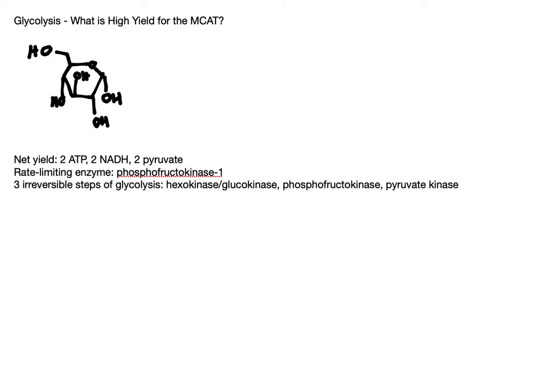One thing to note is that most lessons on glycolysis miss the forest for the trees, so here are a few big-picture facts to keep in mind. Number one: glycolysis only happens in the cytosol. In fact, that first step with hexokinase/glucokinase is entirely dedicated to making sure glucose stays in the cytosol. When we phosphorylate glucose to glucose-6-phosphate, we are essentially trapping glucose inside the cell and getting it ready to go down the glycolytic pathway.